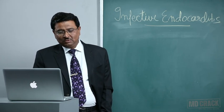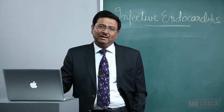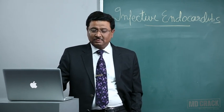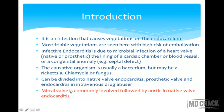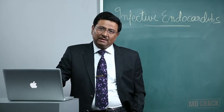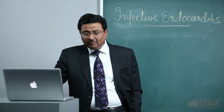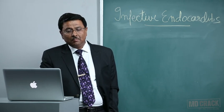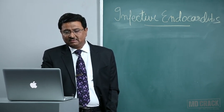A very frequently asked MCQ: which valve is most commonly involved in intravenous drug abusers? In native valve endocarditis, the mitral valve is commonly involved followed by the aortic valve. However, if it is prosthetic involvement, aortic valve prostheses are more likely to be involved in infective endocarditis compared to mitral valve prostheses.